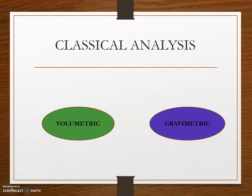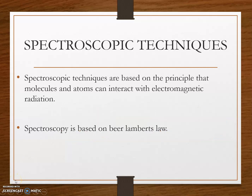Volumetric analysis relies on critical volume measurement, while gravimetric analysis relies on critical mass measurement. Modern techniques include spectroscopic techniques, chromatographic techniques, and nuclear magnetic resonance, among others. We will now see each in detail.